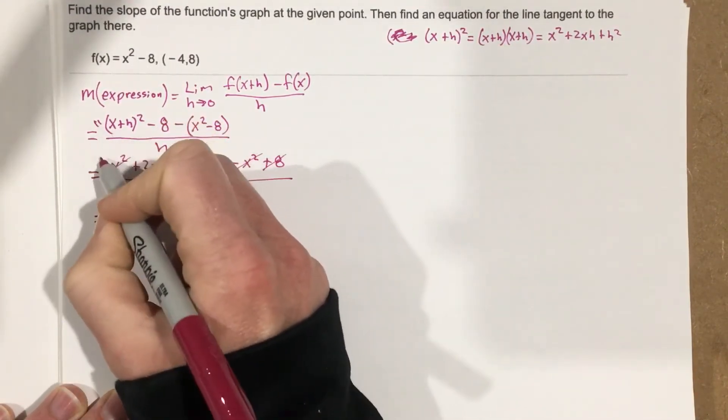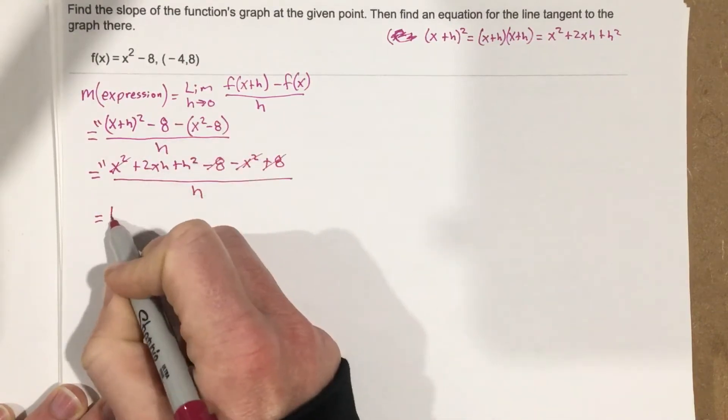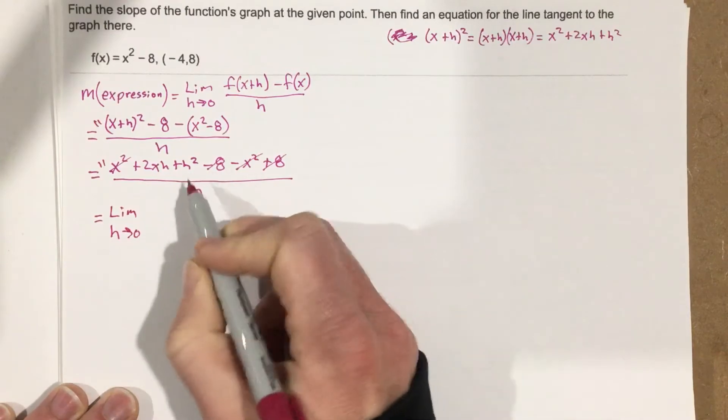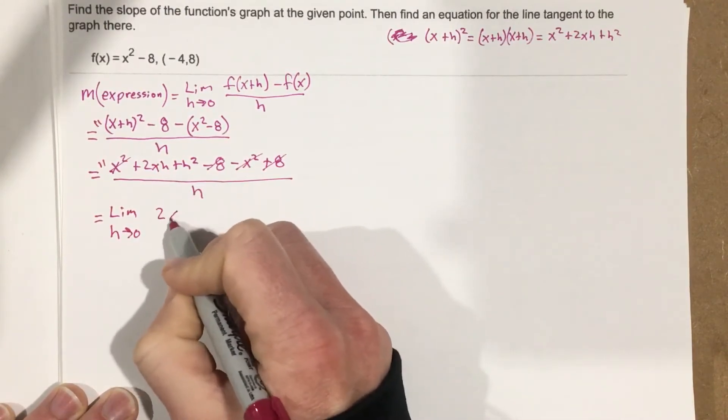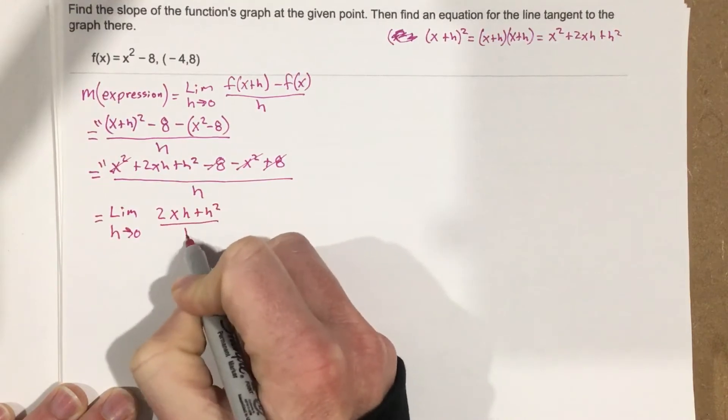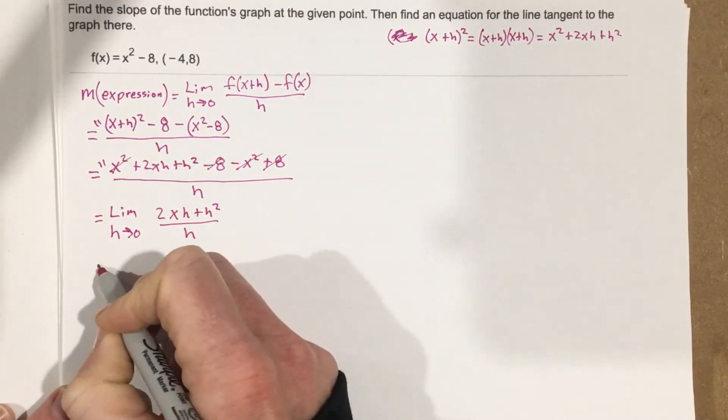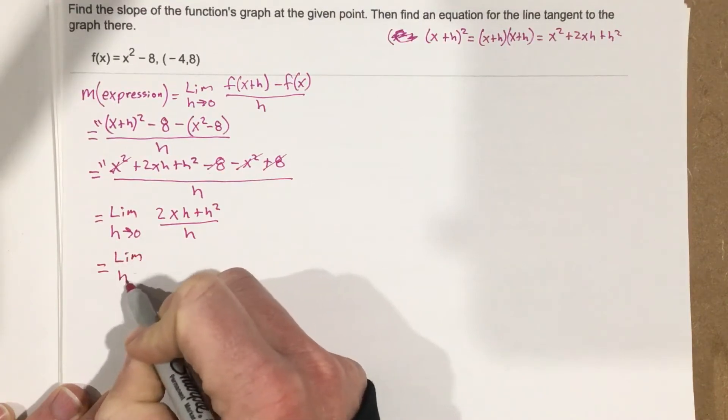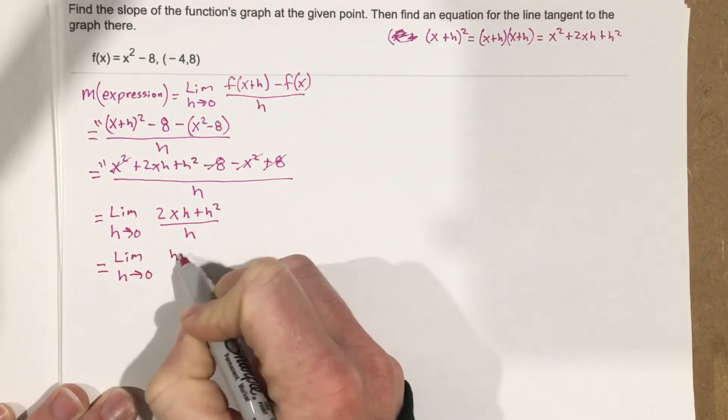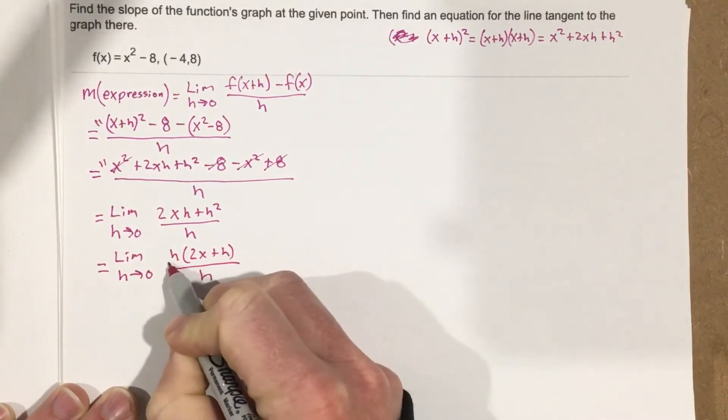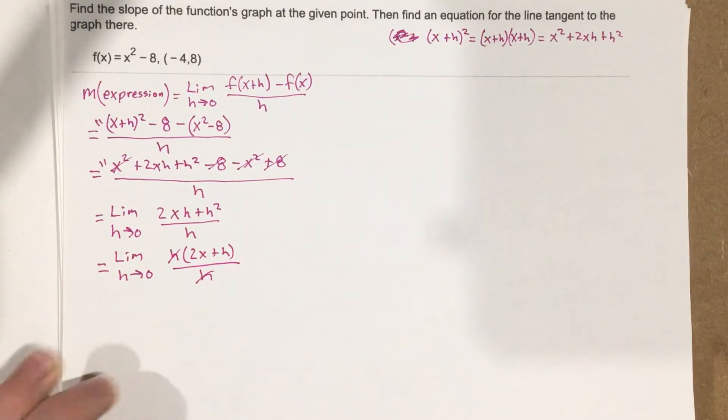I should have put the limit for these, I always forget that. Limit as h approaches 0 of 2xh + h² all over h. Which we can factor out an h on the top, so we got limit as h approaches 0 of h(2x + h) over h. And you can see the h's cancel, which is nice, that's our goal.